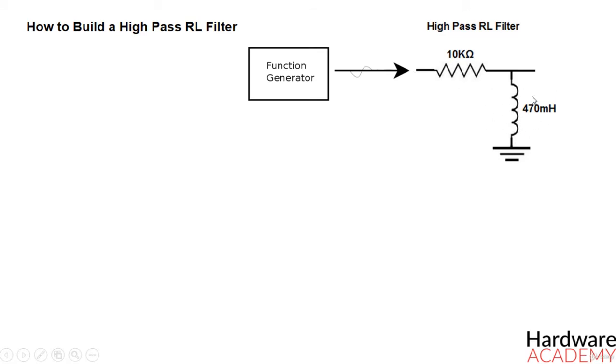For this circuit, we will use a 470 mH inductor and a 10 kOhm resistor. This circuit will form a high-pass filter, passing through high-frequency signals through to output, while filtering low-frequency signals through the inductor.